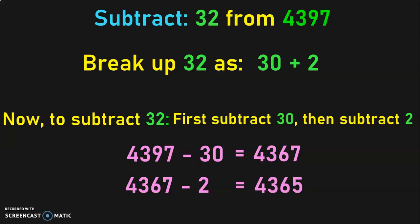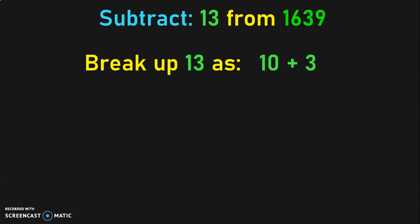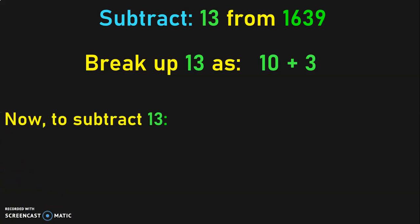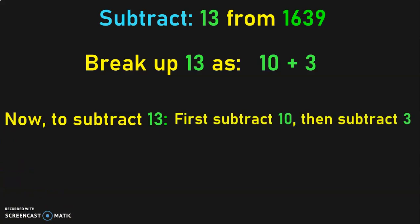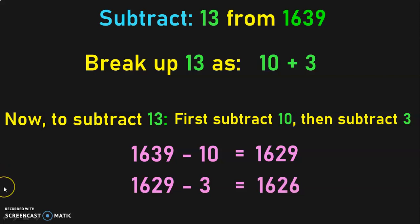Let us do another example. Subtract 13 from 1639. The nearest tens to 13 is 10. So, you can break up 13 as 10 plus 3. To subtract 13, first subtract the given number by 10 and then subtract by 3 again. So, 1639 minus 10 gives you 1629. Then, 1629 minus 3 gives you the answer 1626. See how fast the calculation is done using the mental mathematics approach.